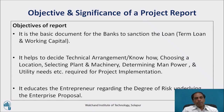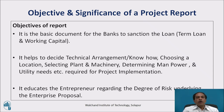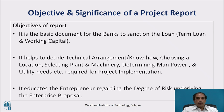The next objective is it helps to decide the technical arrangements or know-how, choosing a location, selecting plant and machinery, determining manpower and utility needs required for project implementation. When we talk about a project, it has four major aspects: production, marketing, finance and HR. We have to judge whether we are capable of dealing with all four areas — whether we have enough technology, enough marketing arrangement, whether I can manage the skilled and managerial manpower required, and whether I can manage the finance. These are the four pillars of the business, and in a project report we have to establish the details and viability of each of these pillars.